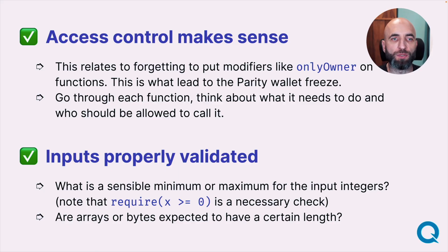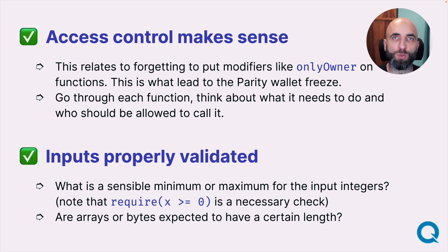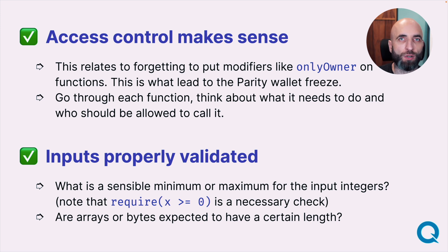Next, think about the inputs into your smart contracts and validate them properly. What are the minimum and maximum values for input integers? Should it be allowed to go below zero? Are arrays or bytes expected to have a certain length, or is it dynamic? Think about all of this beforehand and validate properly.